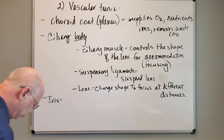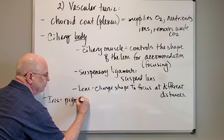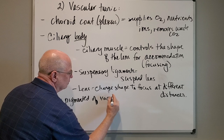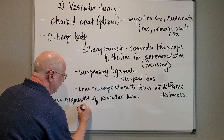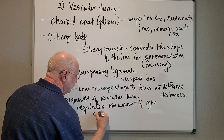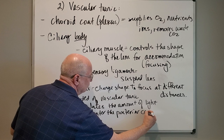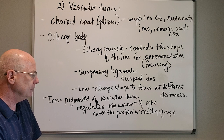The iris is the pigmented part of the vascular tunic. Its major function is to regulate the amount of light entering the posterior cavity of the eye. The iris is the colored part of your eye and is really a muscular structure that adjusts how much light enters the back of the eye.